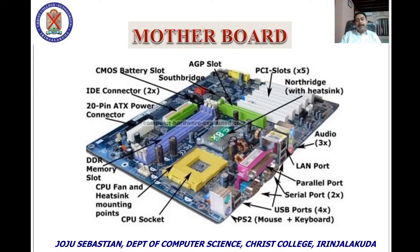This is the diagram of a motherboard. Details of the motherboard will be explained later in another video. In the diagram we can see: CPU socket, CPU fan and heat sink mounting points, DDR memory slot for RAM, ATX power connector, IDE connector, CMOS battery, South Bridge, AGP slot, PCI slot, North Bridge, PS2 port, USB port, serial port, LAN port, parallel port, etc.